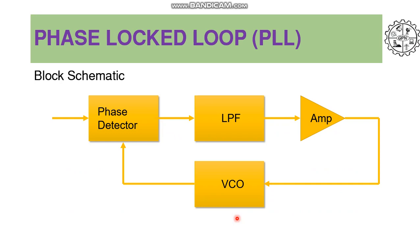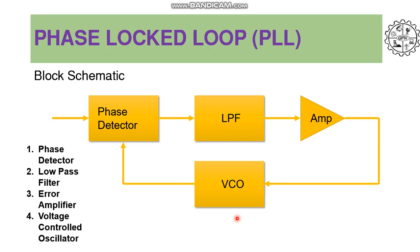Phase lock loop essentially consists of a closed loop system which has different parts such as phase detector, low pass filter, error amplifier, and voltage controlled oscillator. This VCO is a very important part of this PLL. The VCO is a free running multivibrator which operates at a set frequency FO called free running frequency. This frequency is determined by an external timing capacitor and external resistor connected to the VCO that determines the free running frequency.